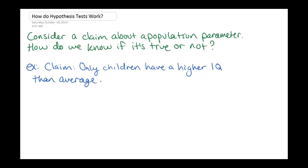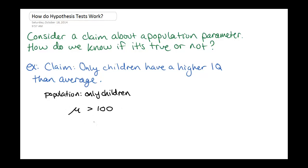I have a few example claims here. The first is the claim that only children have a higher IQ than average. This is a claim about all only children — that would be our population — and we're claiming that the mean of those IQ values is higher than average, which is 100. So we would be claiming that the mean for this population is greater than 100, written in symbolic form as an inequality.